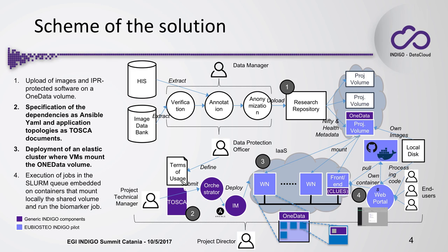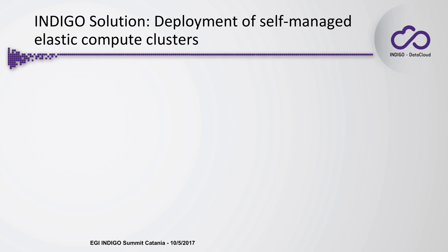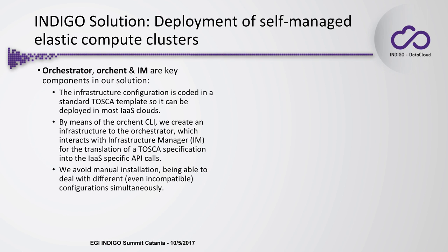This part will not be demonstrated in this video. The dark indigo boxes represent generic INDIGO components, while the light indigo color represents those related to our pilot case. The two sets of elements demonstrated are those needed for deploying self-managed elastic compute clusters: the Orchestrator, ORCAN command line interface, and Infrastructure Manager. These three components enable deployment of the virtual infrastructure as a document describing how the infrastructure should be configured, deployable on any IaaS — in our case, an OpenNebula backend, but also compatible with Amazon Cloud or OpenStack.